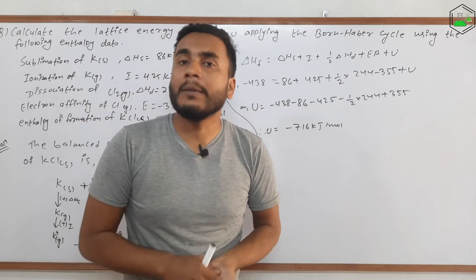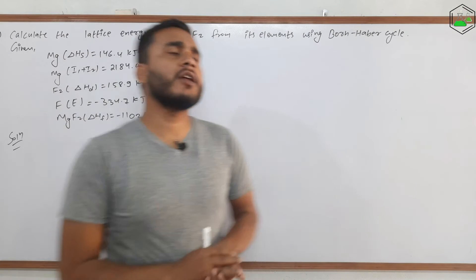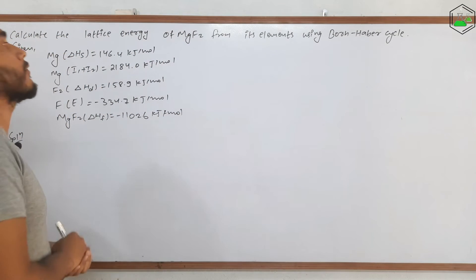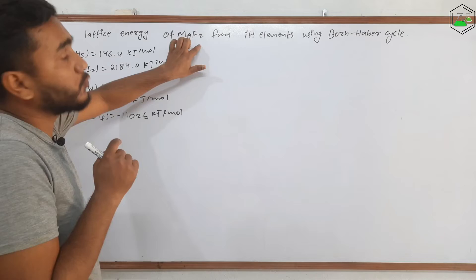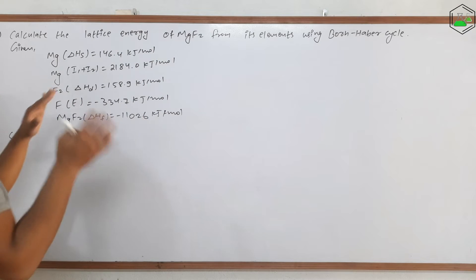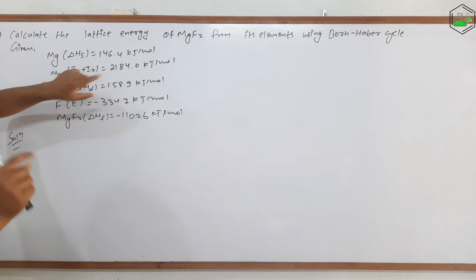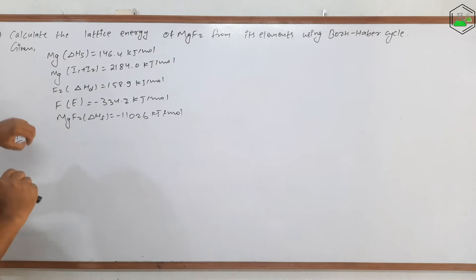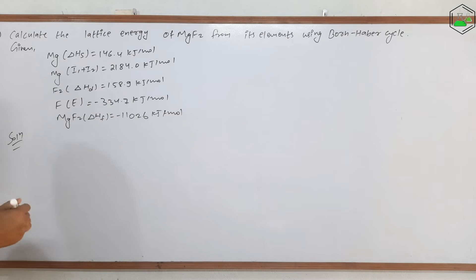Now let us look at the second numerical problem, which is about the MX₂ type compound. The question is: calculate the lattice energy of magnesium fluoride (MgF₂), an MX₂ type compound, from its elements using the Born-Haber cycle. The given data includes: ΔHs (sublimation energy) for magnesium, ionization energies I₁ and I₂ for magnesium (there are two ionization energies because magnesium has a valency of 2), dissociation energy ΔHD for fluorine gas, electron affinity for fluorine, and enthalpy of formation of MgF₂.